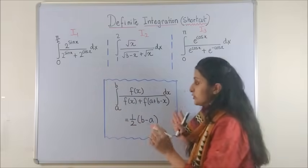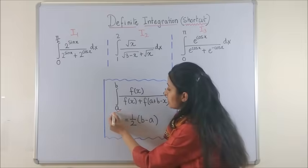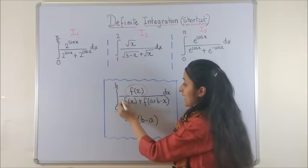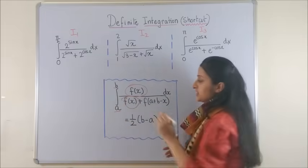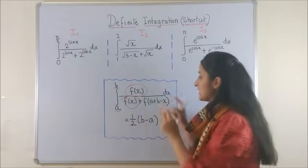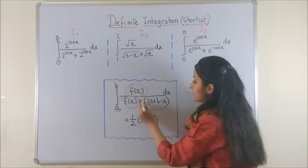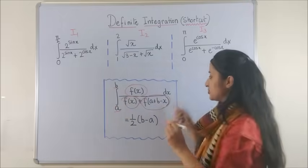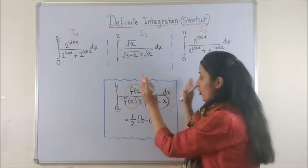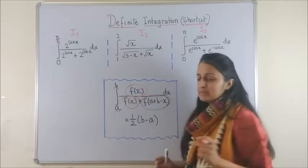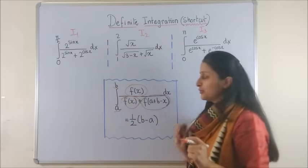Have a look at this. So if you have the limits going from a to b, you have the function in the numerator and then the same function is there in the denominator. Plus, if you add a plus b and do minus x, that function is also present. If all these things are in order, then the answer is simply you subtract the upper limit minus lower limit upon 2.